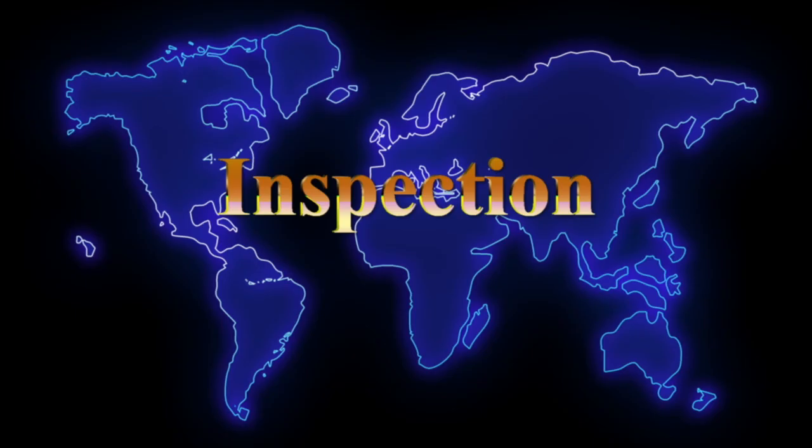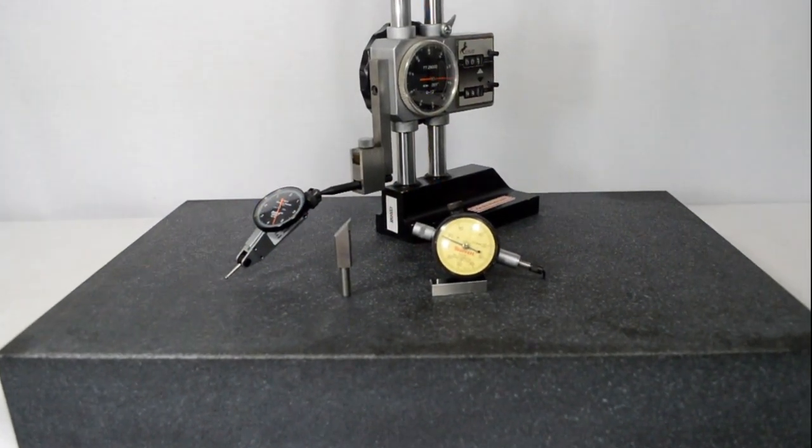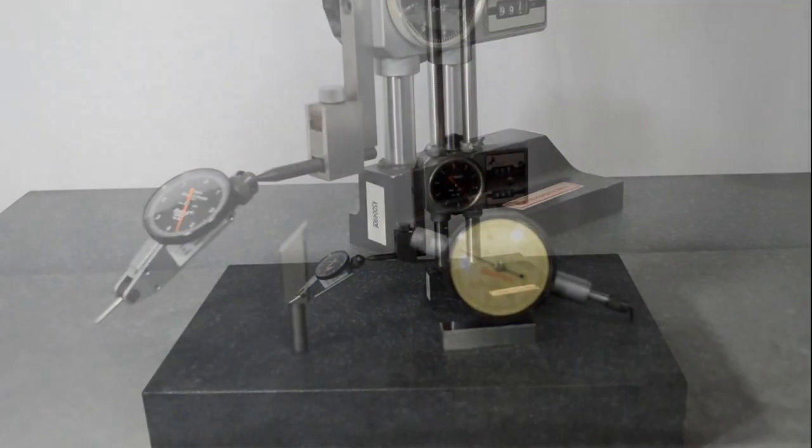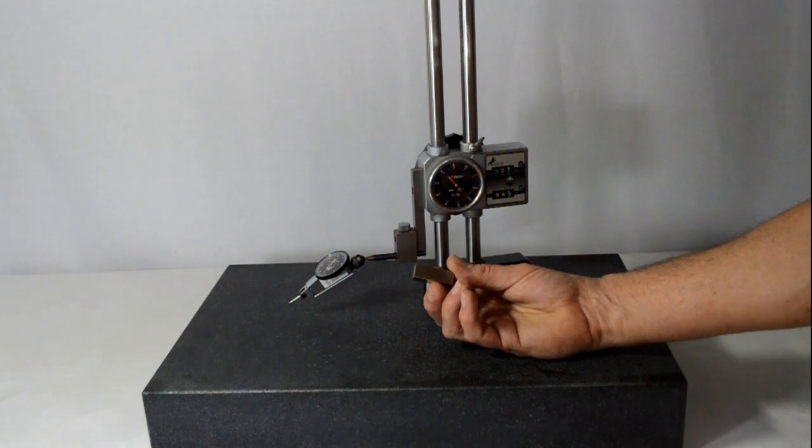This video is about the basic use of a height gauge. For this test we're going to use the sharp etalon dial gauge. And what we're looking to do is just find zero from the bottom of the surface plate to the top of the part.